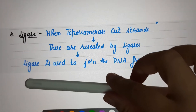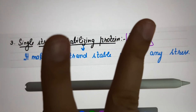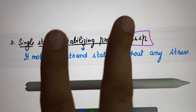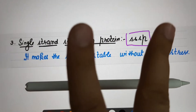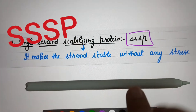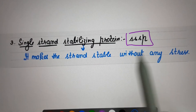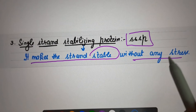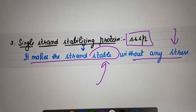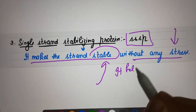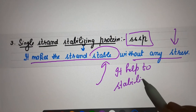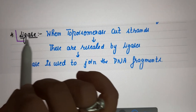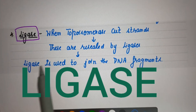There is another stabilizing protein. Once the strands are opened up, to make them more stable so they do not combine again, we have the single strand stabilizing protein, also called SSSP or 3SP. Even after topoisomerase has acted, if the strand still has some stress, that is released by 3SP. It helps in stabilizing the strand without any additional stress.